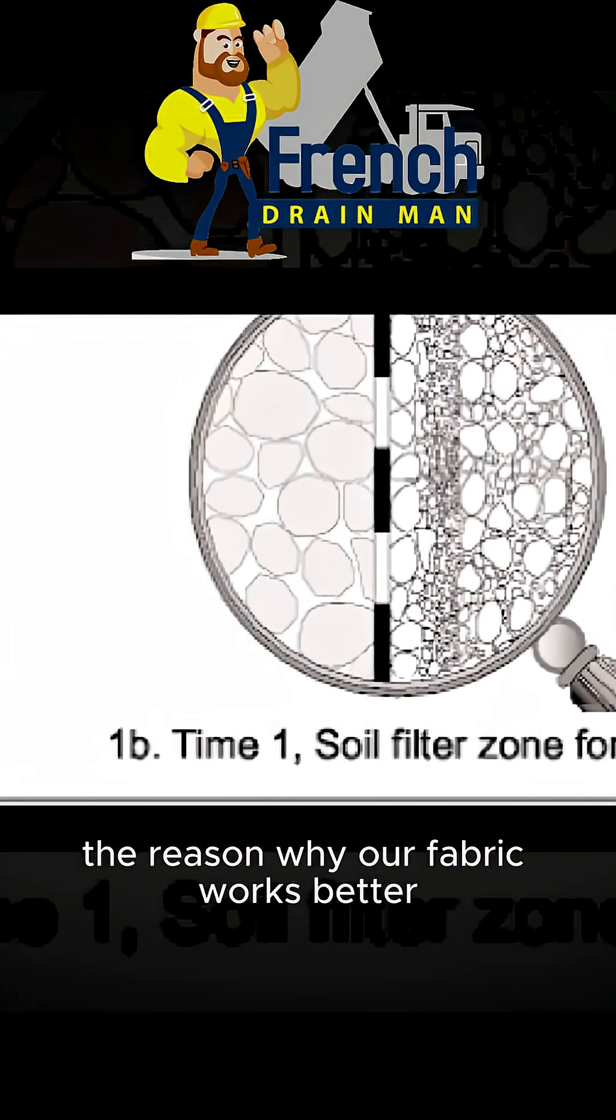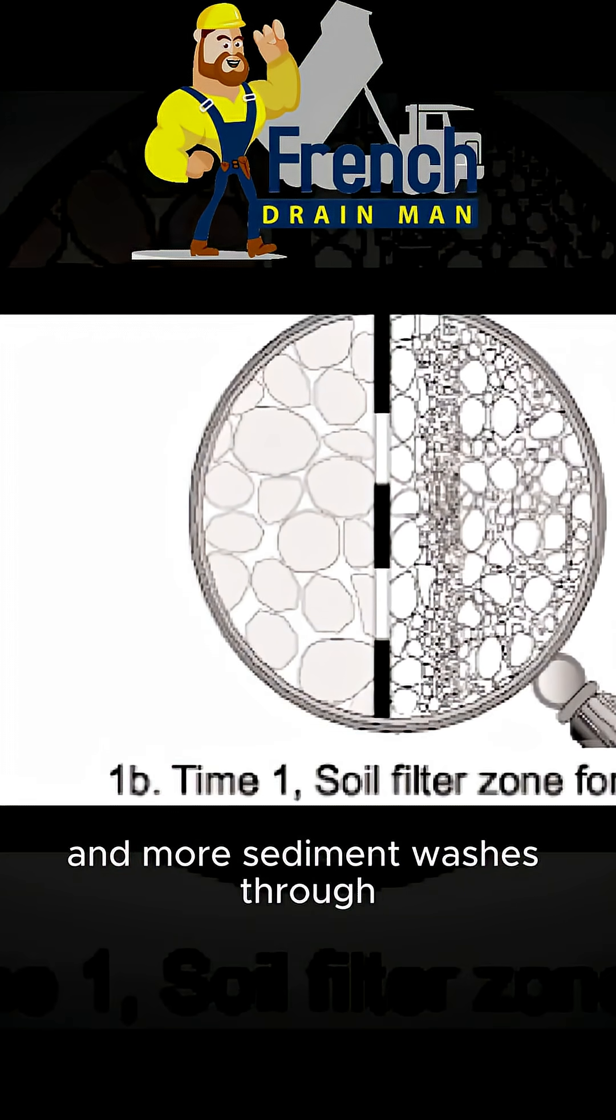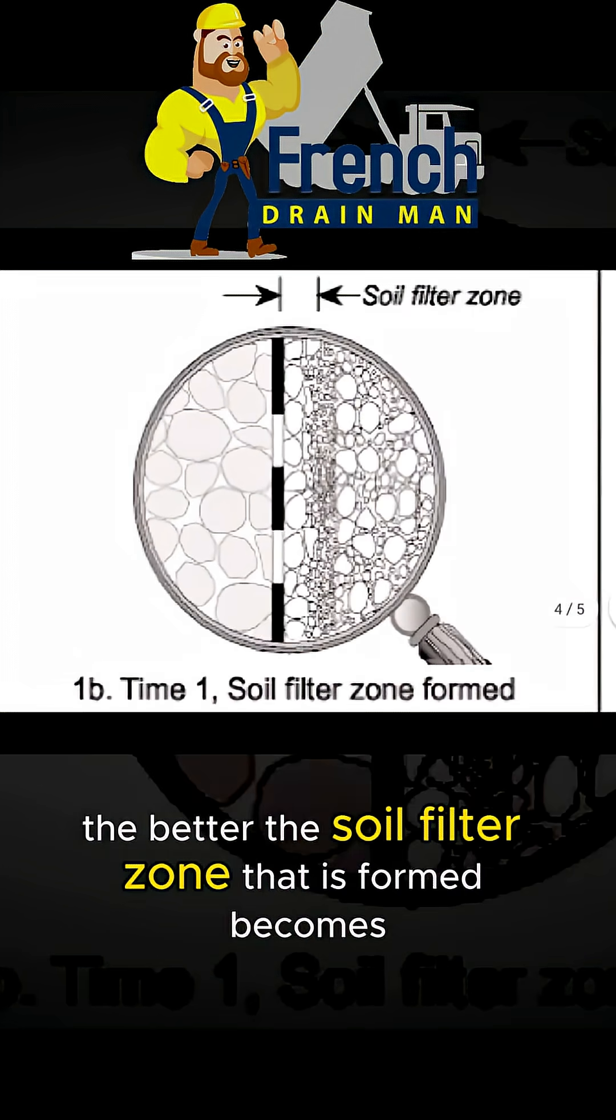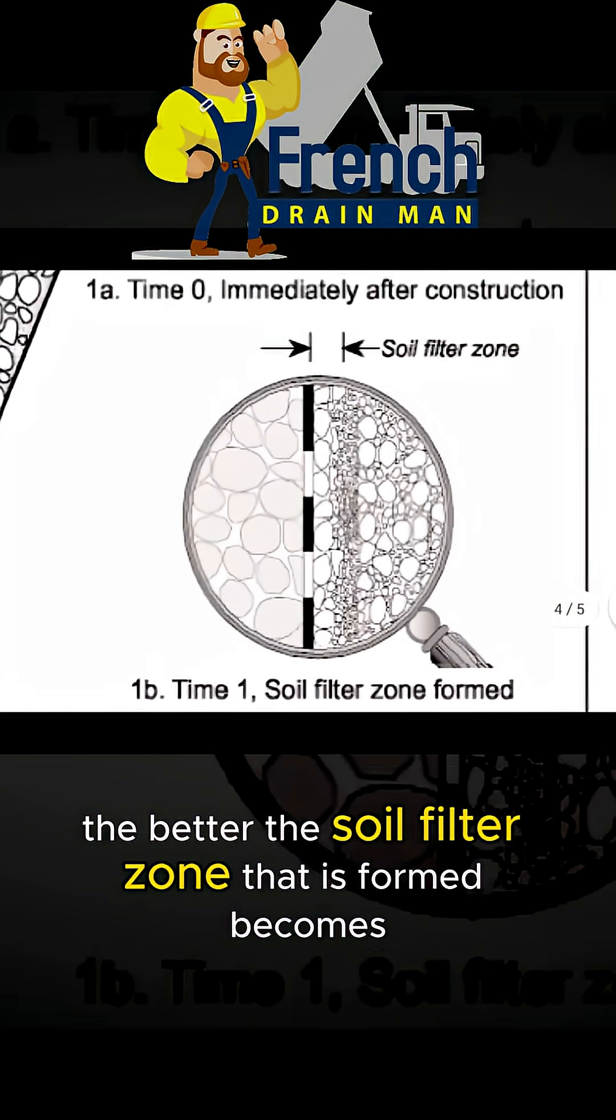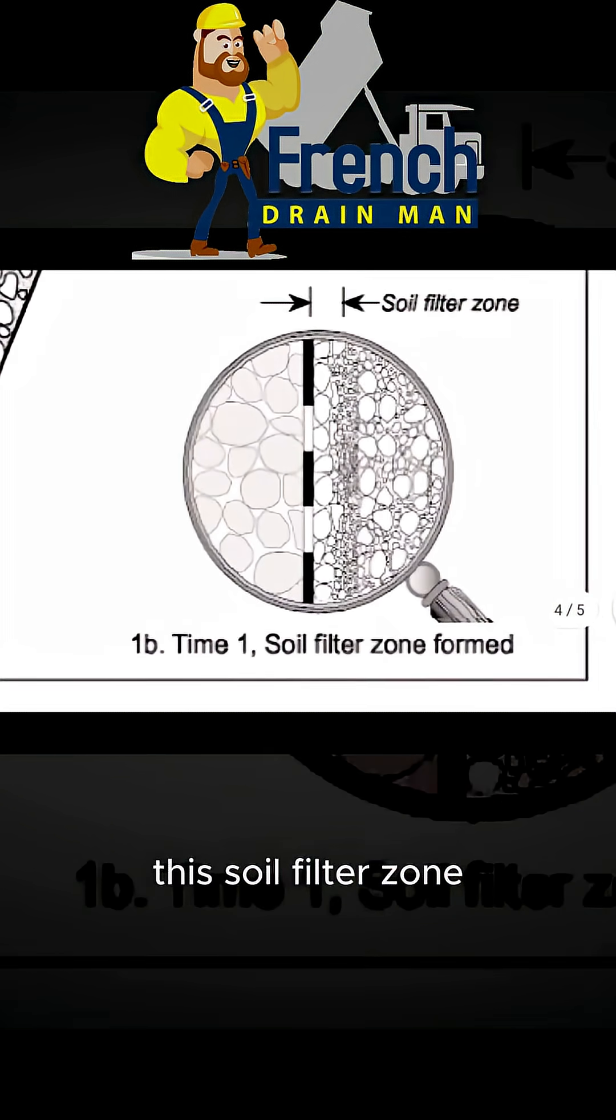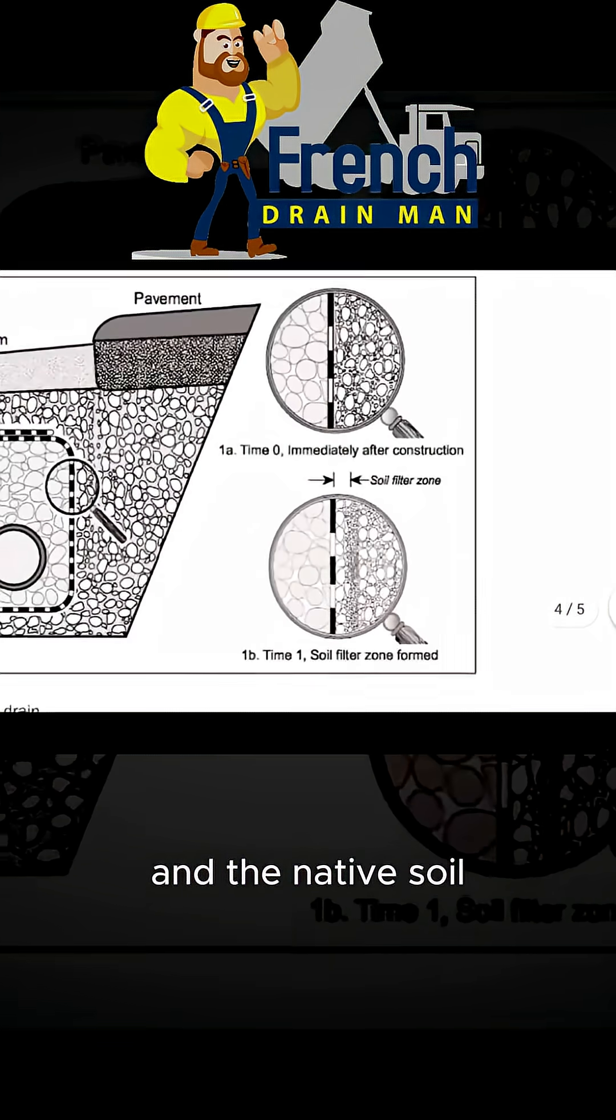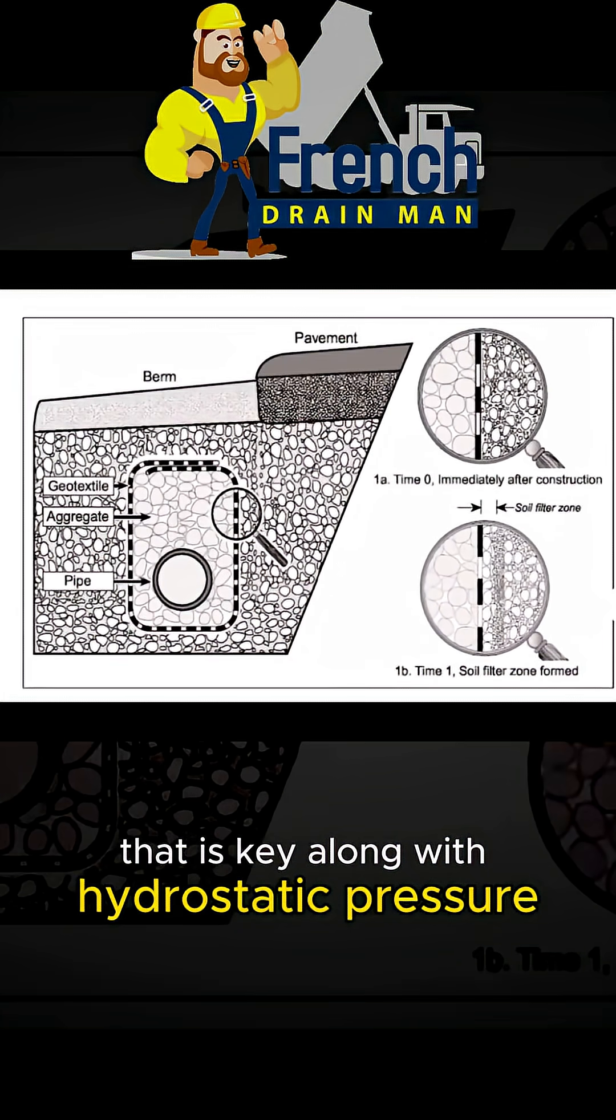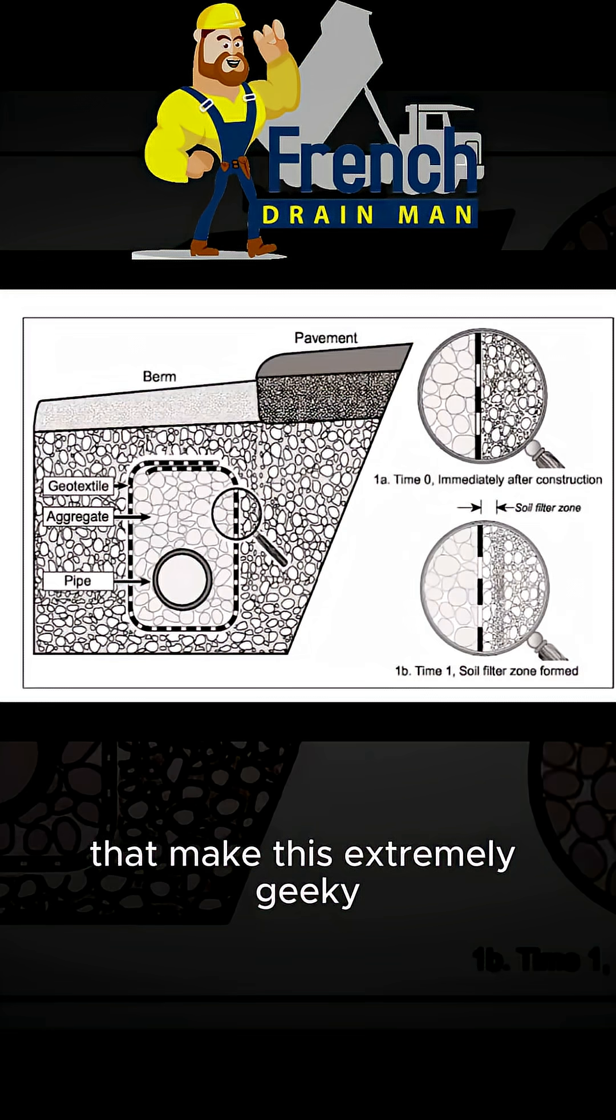The reason why our fabric works better and better is because as time goes on and more sediment washes through the non-woven geotextile double punch fabric, the better the soil filter zone that is formed becomes. This soil filter zone forms between the non-woven geotextile fabric that's double punched and the native soil. That is key, along with hydrostatic pressure and all kinds of different things that make this extremely geeky.